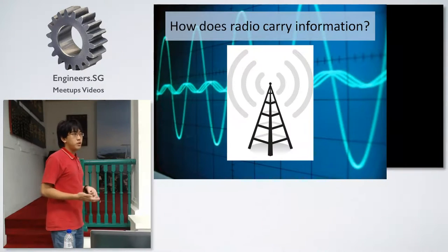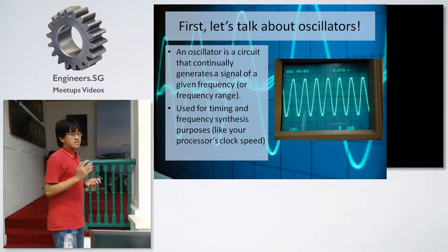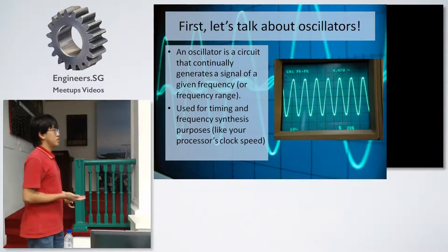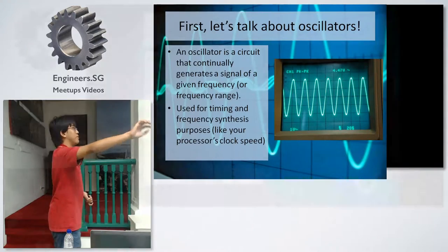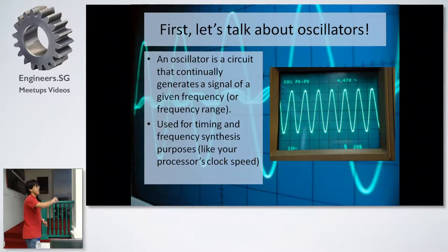But how does radio carry information? Let's talk about oscillations first. When you tune your radio, you use the dial and tune to maybe 98.5 FM. What you're doing is you're tuning your oscillator to the radio transmitter, the station that's transmitting. You're tuning to its frequency and trying to listen for it. An oscillator is just a circuit that generates a signal of a given frequency, usually used for things like timing and frequency synthesis, like generating your processor's clock speed.